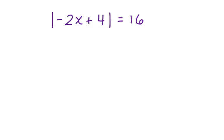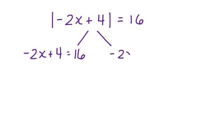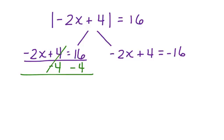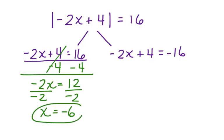The absolute value of negative 2x plus 4 is equal to 16. Again, we're going to break this out into two possible equations: negative 2x plus 4 equals positive 16, and negative 2x plus 4 equals negative 16. Let's solve the first equation. We subtract 4 from both sides — these cancel — bringing down negative 2x equals 12. Divide both sides by negative 2, and x is equal to negative 6. This is one possible solution for this absolute value equation.